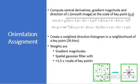The next one is orientation assignment. Now an orientation is assigned to each key point to achieve invariance to image rotation. A neighborhood is taken around the key point location depending on the scale, and the gradient magnitude and direction are calculated in that region. An orientation histogram with 36 bins covering 360 degrees is created. It is weighted by gradient magnitude and a Gaussian-weighted circular window with sigma equal to 1.5 times the scale of the key point.